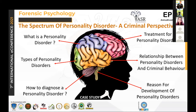Another treatment is medication. According to the Food and Drug Administration, there are no approved medications specifically for personality disorders. However, several psychiatric medicines may help with symptoms: anti-depressants help with anger, impulsivity, irritability, and hopelessness; mood stabilizers help control mood swings and aggression; and anti-psychotic medications, also known as neuroleptics, may help with symptoms including losing touch with reality.